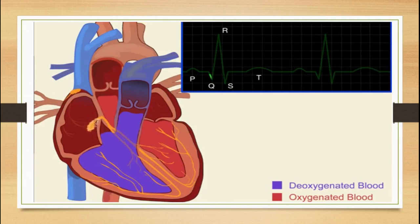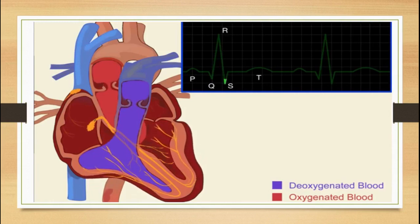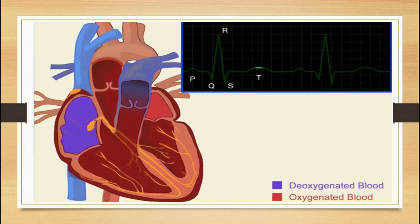This delay is represented by the line between the P and Q waves. At this point, the signal travels through the bundle of His and bundle branches, represented as the Q wave. Finally, the signal travels through the Purkinje fibers, causing the ventricles to contract and pump blood from the right ventricle to the lungs and from the left ventricle to all parts of the body — represented as the R and S waves. Together, these form the QRS complex. The last T wave represents the recovery of the ventricles.